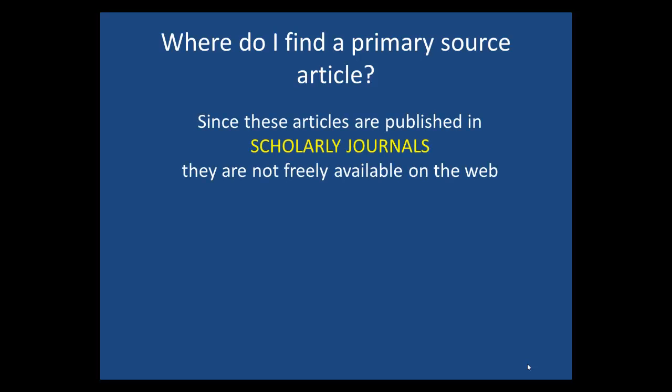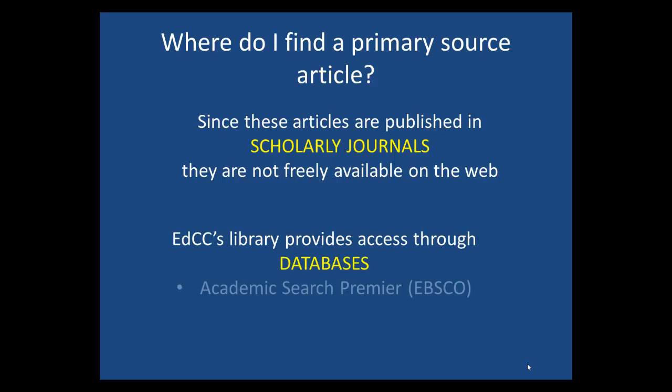Now that we know what we're looking for, where can we find a primary source article? You're ready to search! Scholarly journals are not freely available on the web most of the time. The best place to look for articles is in a library database. Academic Search Premier is the best place to start because it has the most scholarly articles, but Crowquest is also a good option.